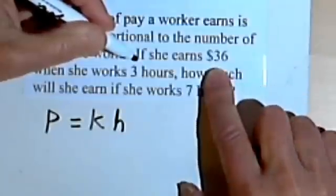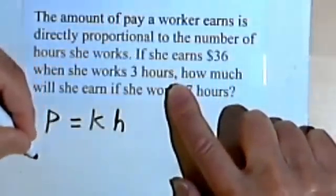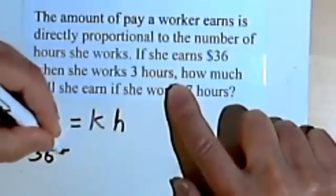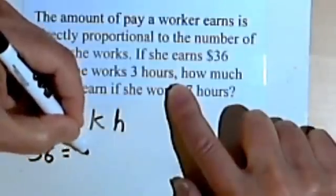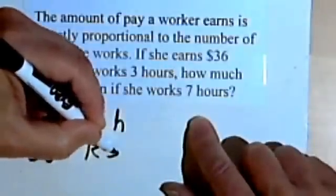If she earns $36 when she works 3 hours. So she earns, that's her pay, $36 when she works 3 hours. So we still have this constant of variation and she works 3 hours.